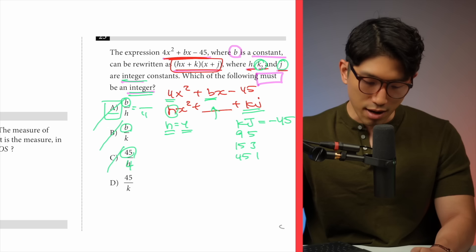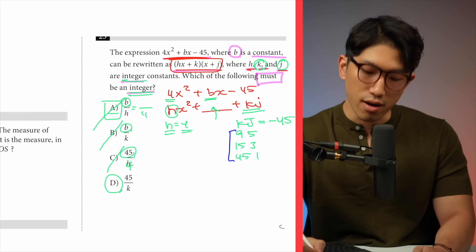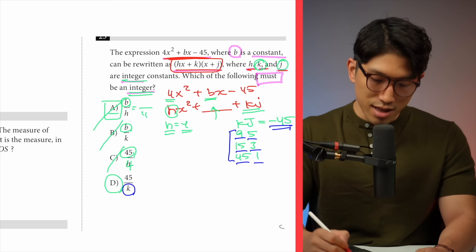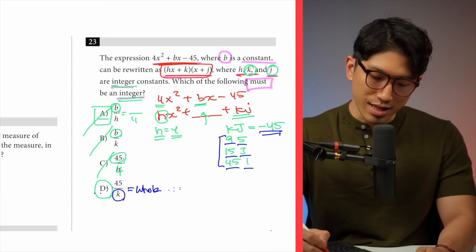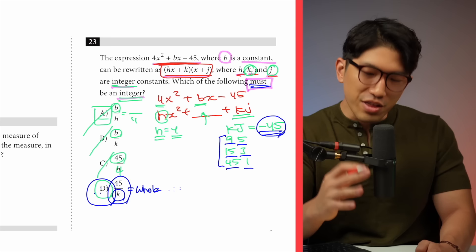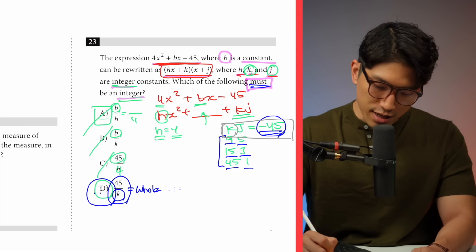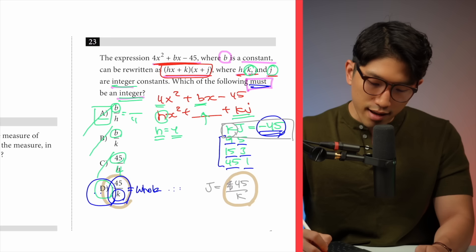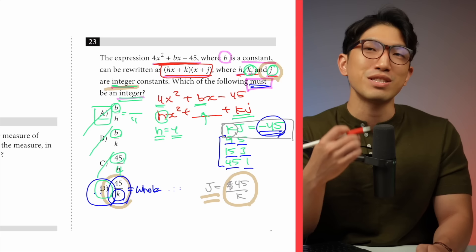What about choice D — 45 over k? We know k is a factor of minus 45, so whether k is 9, 5, 15, 3, 45, or 1, dividing 45 by any factor of 45 always gives a whole number. So choice D must always be an integer. Another way to see it: since kj equals minus 45, we get j equals minus 45 over k, and ignoring the sign, 45 over k equals j. Since j is defined as an integer, 45 over k is always an integer. So the answer is choice D.